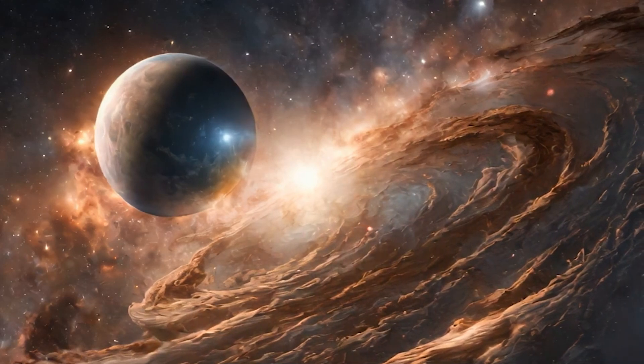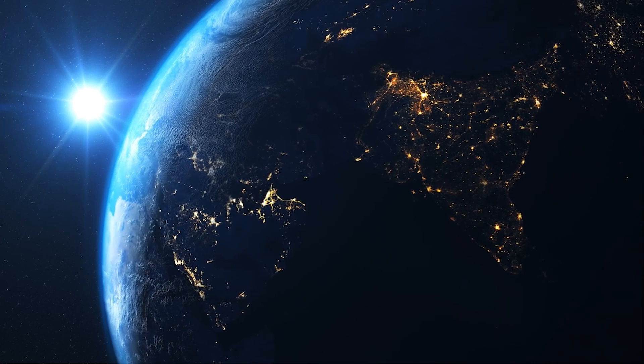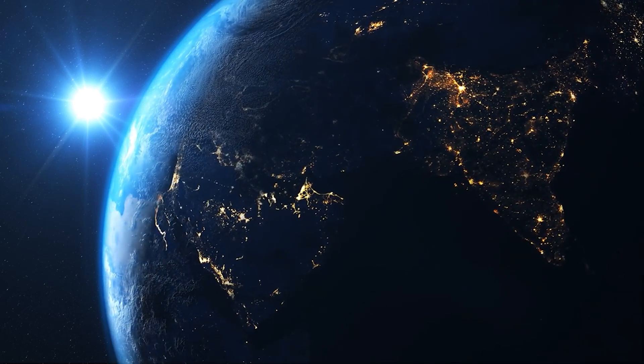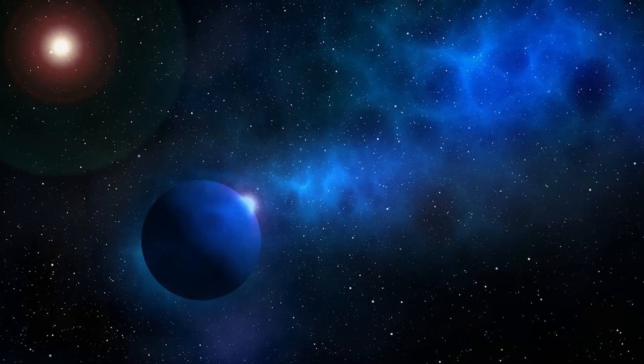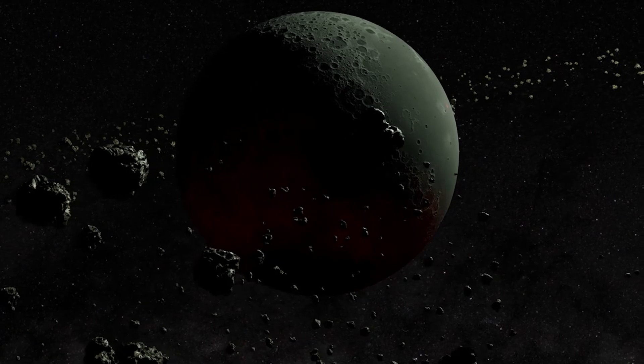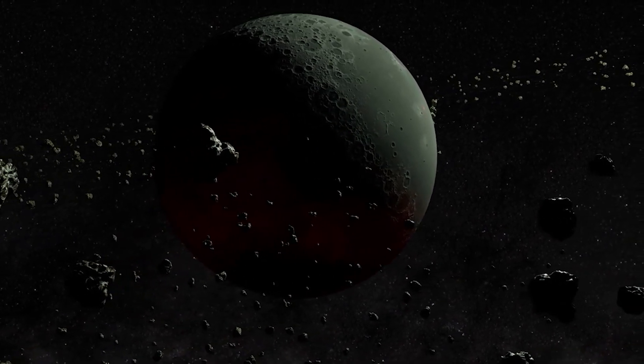These are Jupiter-sized planets drifting through space in pairs, with some separated by distances as vast as 390 times the space between Earth and the Sun. These JuMBOs, too small to be classified as stars, present a puzzling conundrum.